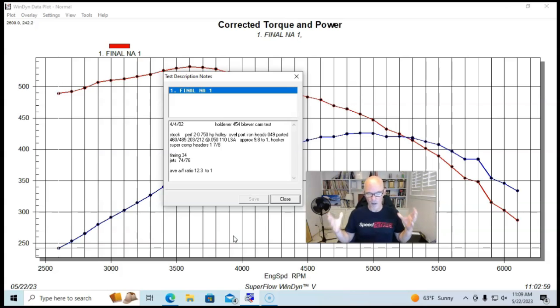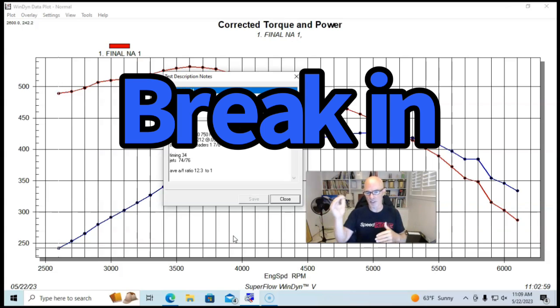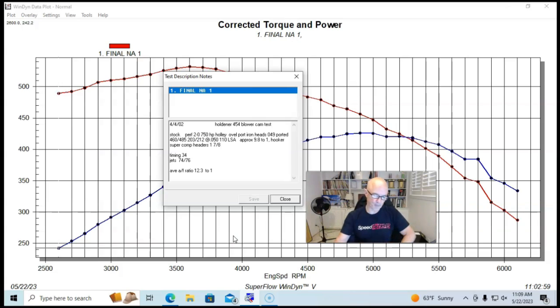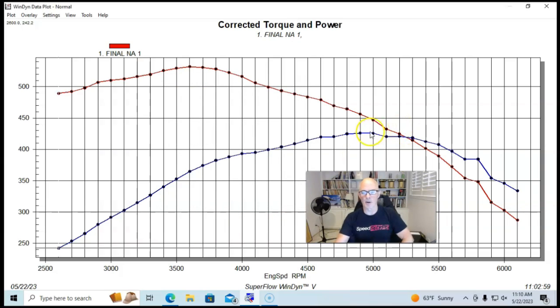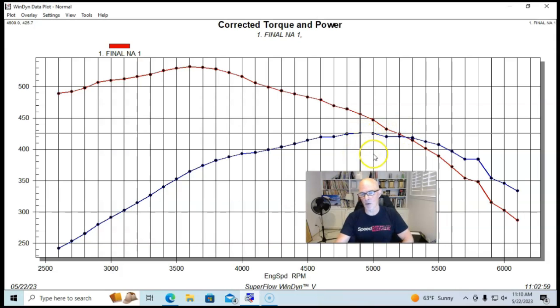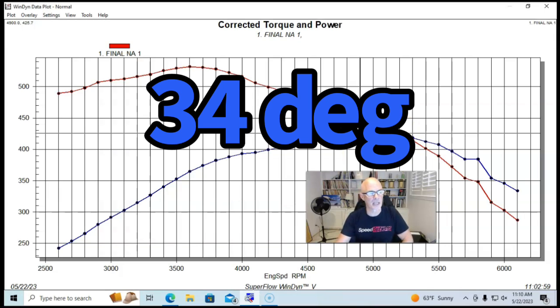This thing also had some roller rockers on it, stock ratio roller rockers. We ran this through a couple of break-in cycles and then started to do some tuning and make some power. On the first good power run, this thing had 34 degrees of timing in it.